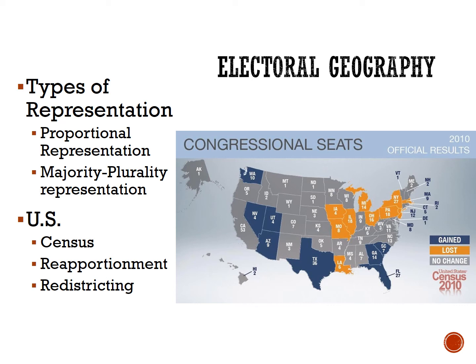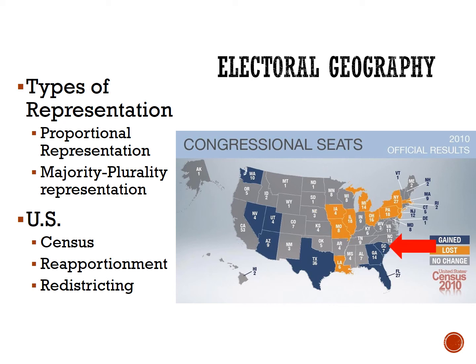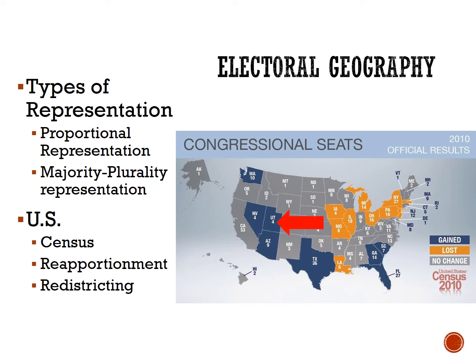Some states will gain districts and thus gain representation in the House, while others will lose districts and representatives. For example, the so-called Rust Belt — including Pennsylvania, Ohio, and Michigan — lost representatives after the 2010 census, while Sun Belt states like Georgia, South Carolina, and Florida, along with Southwestern states like Arizona, Nevada, and Utah, all gained representation.